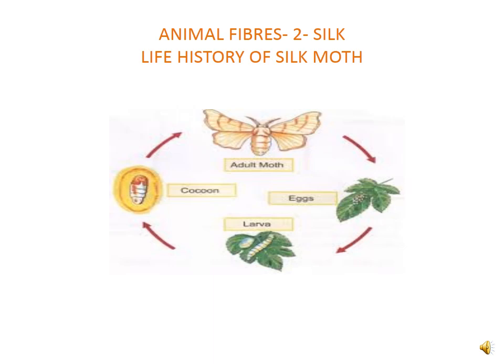It first weaves a net to hold itself. Then it swings its head from side to side in the form of a figure of eight. During these movements of the head, the caterpillar secretes fiber made up of protein, which hardens on exposure to air and becomes silk fiber. Soon the caterpillar completely covers itself with silk fibers and turns into a pupa. This covering is known as a cocoon.